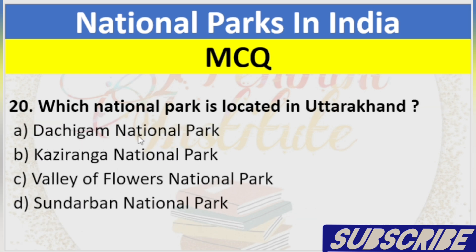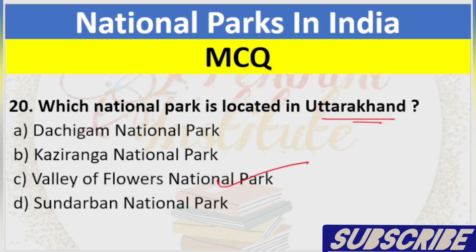Question 20: Which National Park is located in Uttarakhand? A. Dachigam National Park, B. Kaziranga National Park, C. Valley of Flowers National Park, D. Sundarbans National Park. Answer: C. Valley of Flowers National Park.